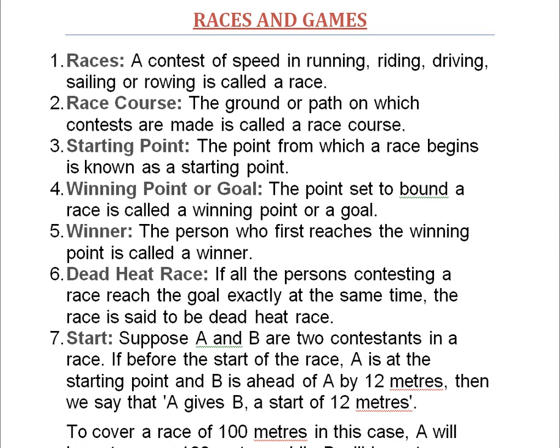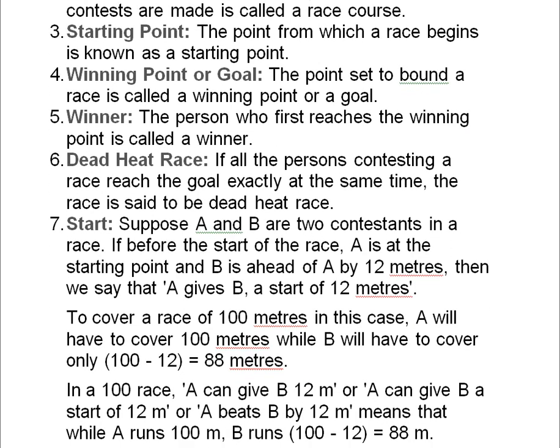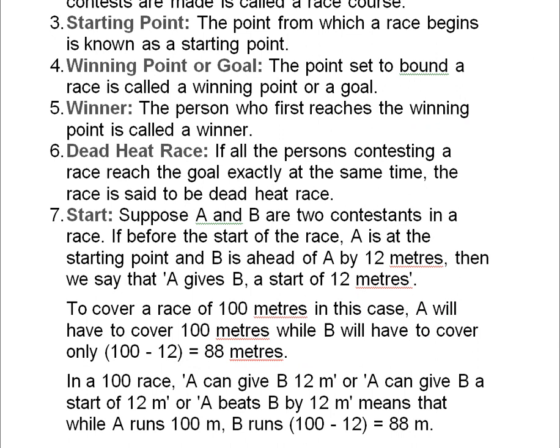What is a race? A race is a contest of speed in running, riding, driving, sailing, or rowing. The ground or path on which contestants run is called a race course. The point from which a race begins is the starting point. The point set to bound a race is called the winning point or goal, and the person who first reaches it is the winner. If all contestants reach the goal at exactly the same time, the race is called a dead heat race.